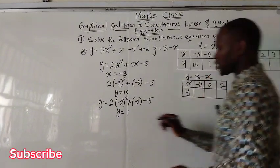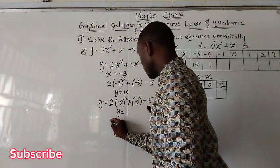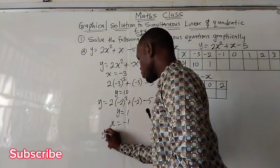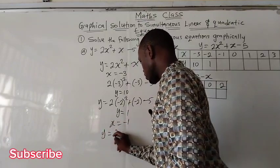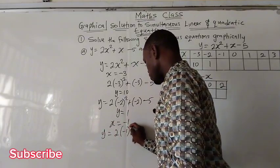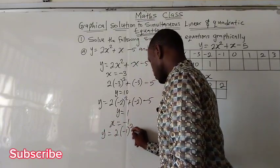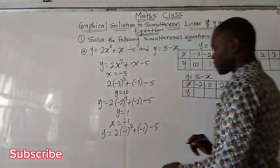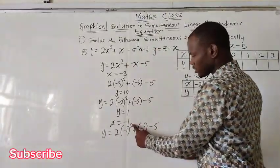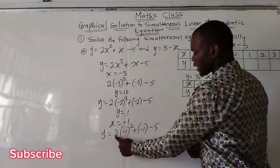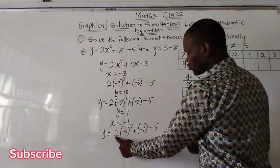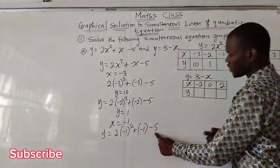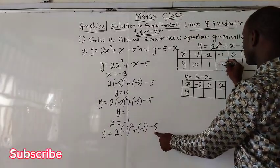When x is negative 1, y is going to be 2 times negative 1 squared plus negative 1 minus 5. Negative 1 squared is positive 1 times 2, giving 2. 2 minus 1 gives us 1; 1 minus 5 gives us negative 4.